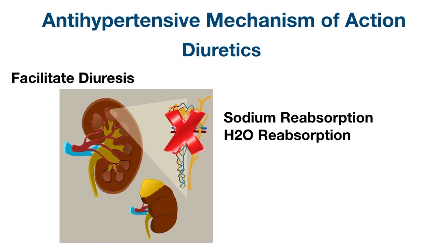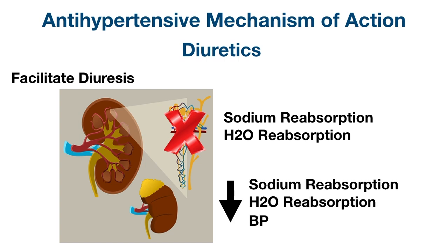Diuretics act on various parts of the nephron depending on which diuretic it is, but the general concept is the same: their mechanism of action is to inhibit sodium and water reabsorption. This increases water excretion or diuresis. Since we're retaining less water, plasma volume decreases and this ultimately decreases blood pressure.